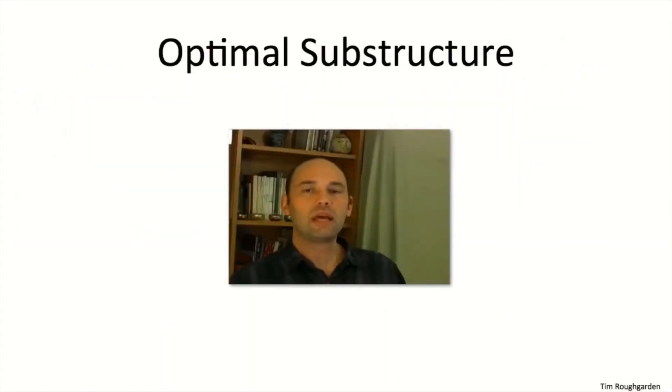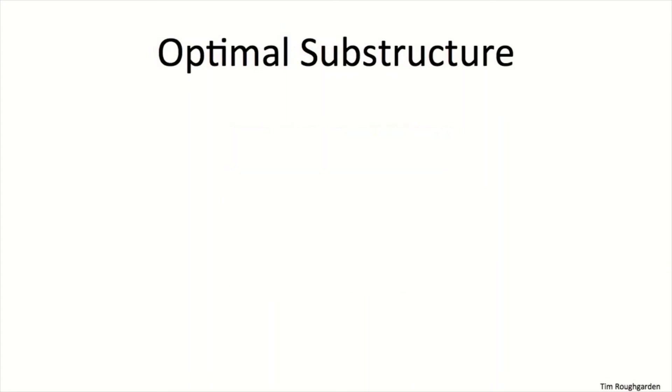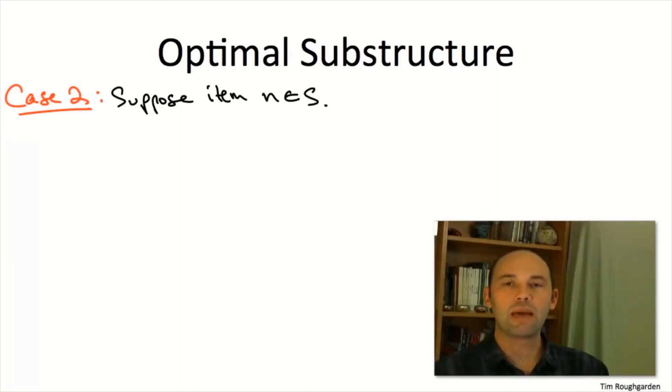Let's go through the slightly trickier case 2 together using a quiz. Suppose the optimal knapsack solution does make use of this final item N. We want to talk about this being composed of an optimal solution to a smaller subproblem. If we're going to delete the last item, we can't talk about S directly because S has the last item. We need to remove the last item from S before we talk about its optimality. So the question is: if we take S, the optimal solution, and remove item N, in what sense is the residual solution optimal? For what kind of knapsack instance, if any, is that an optimal solution?